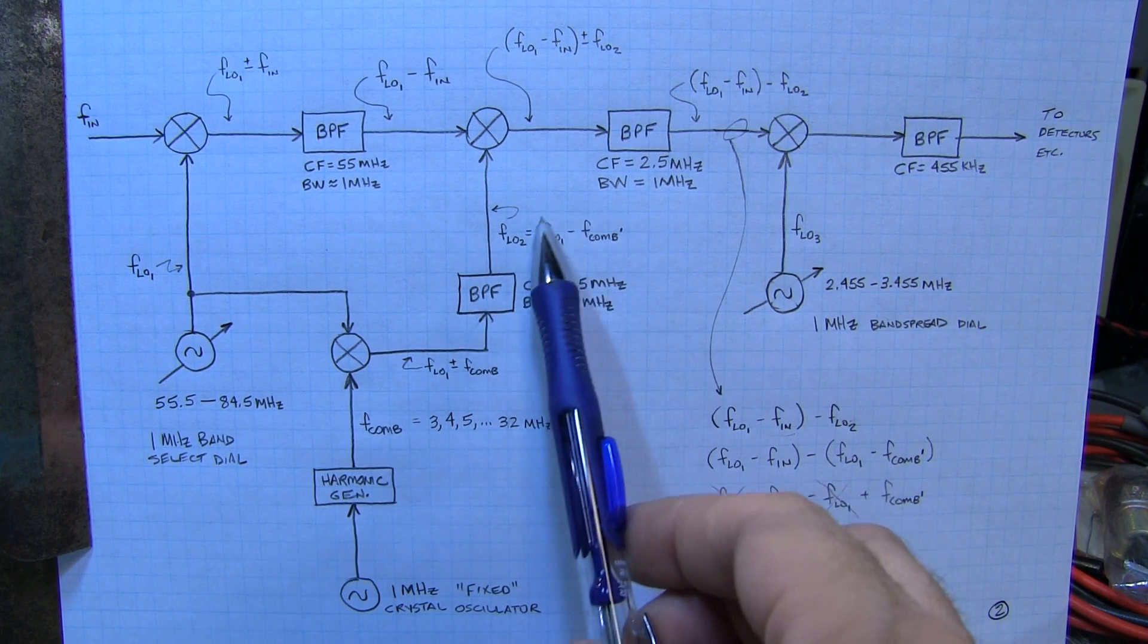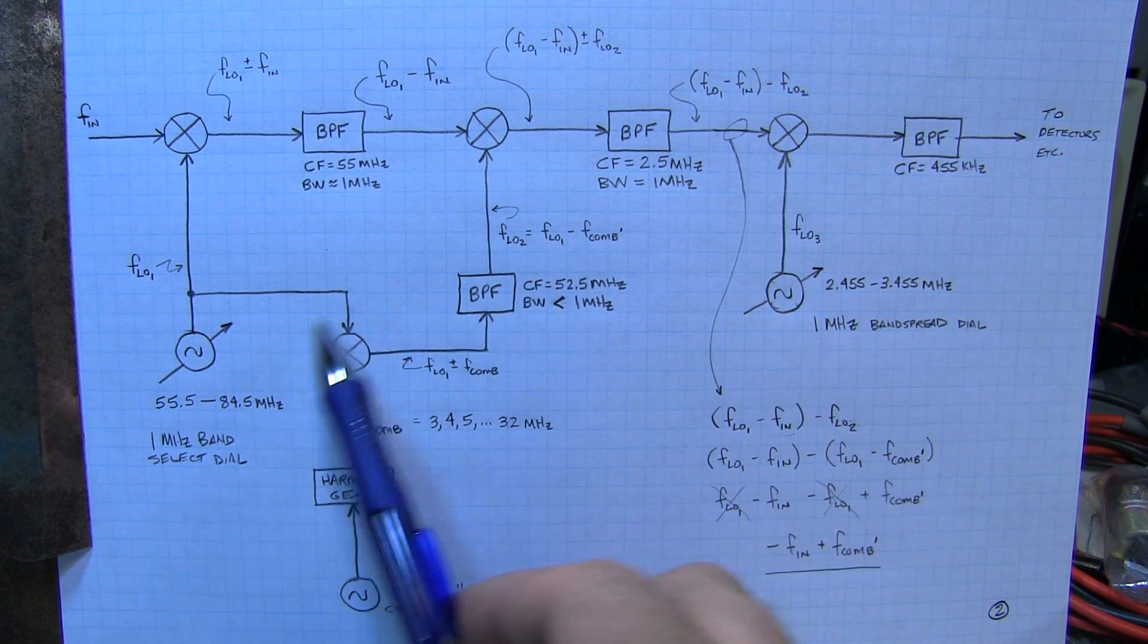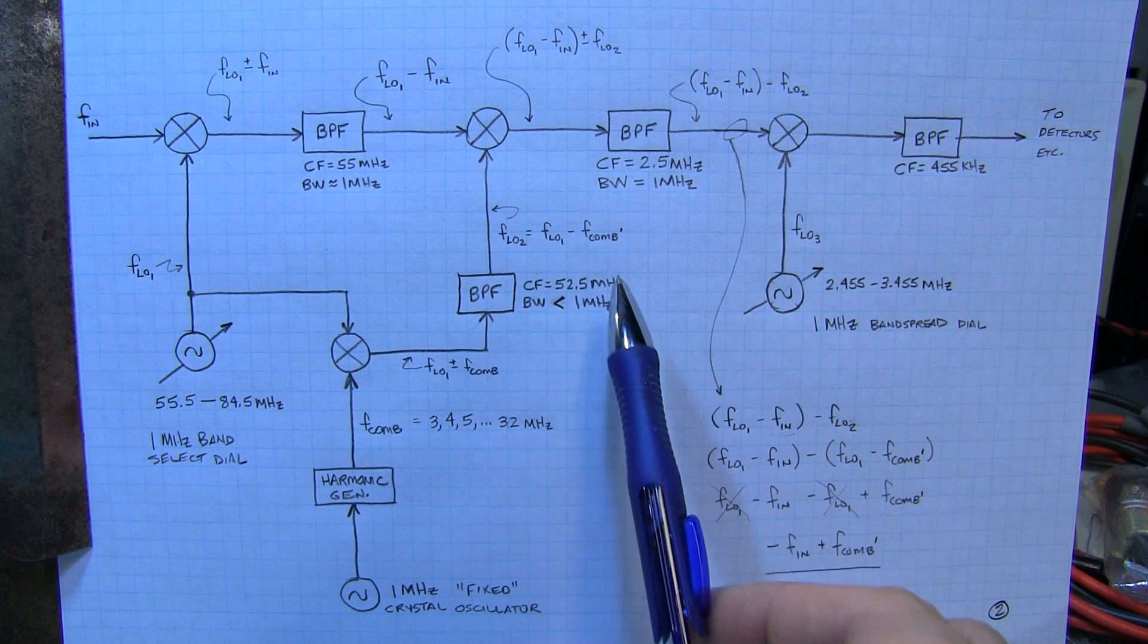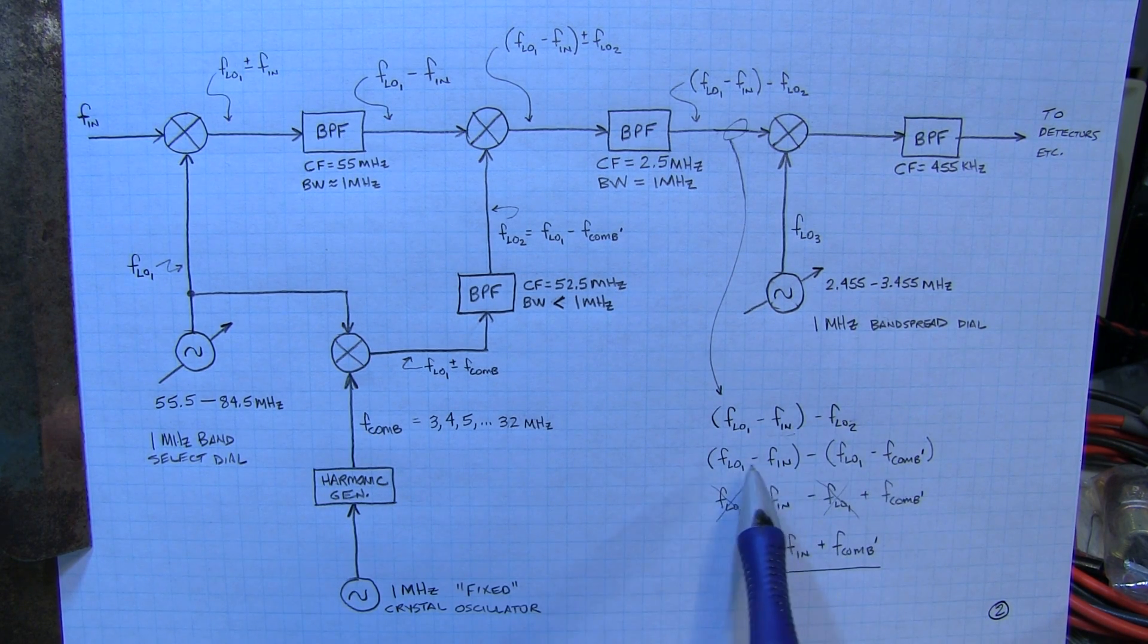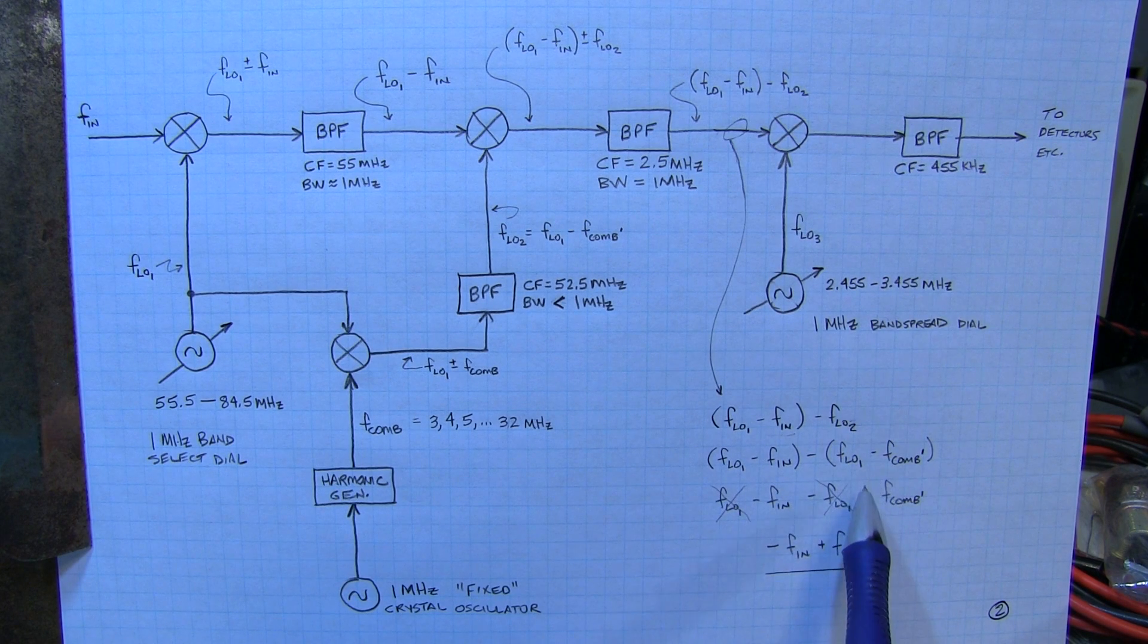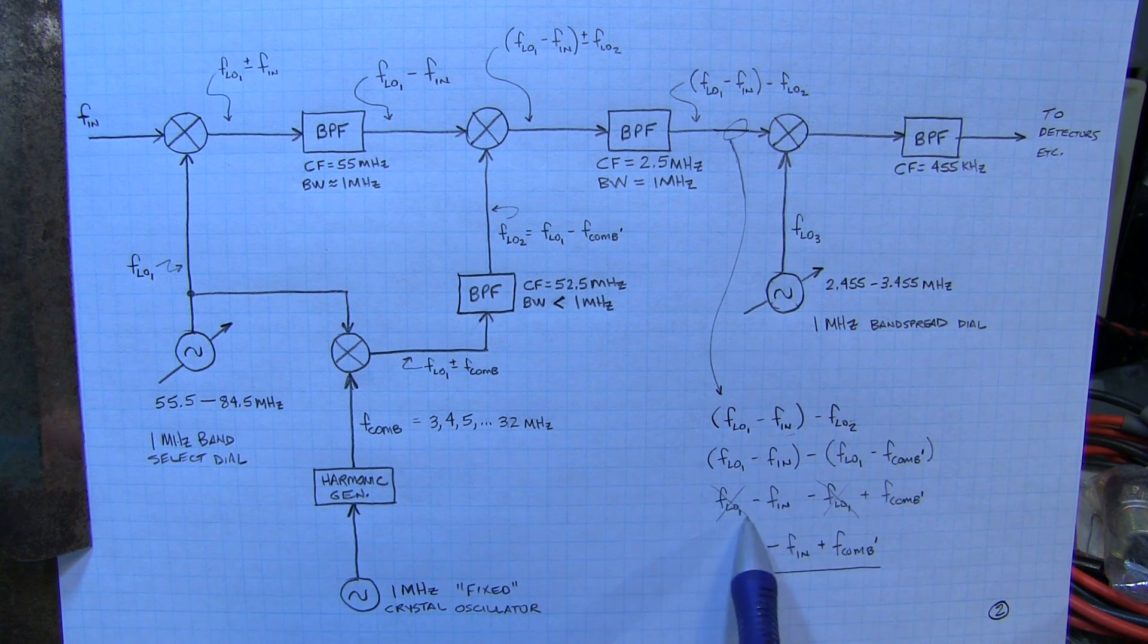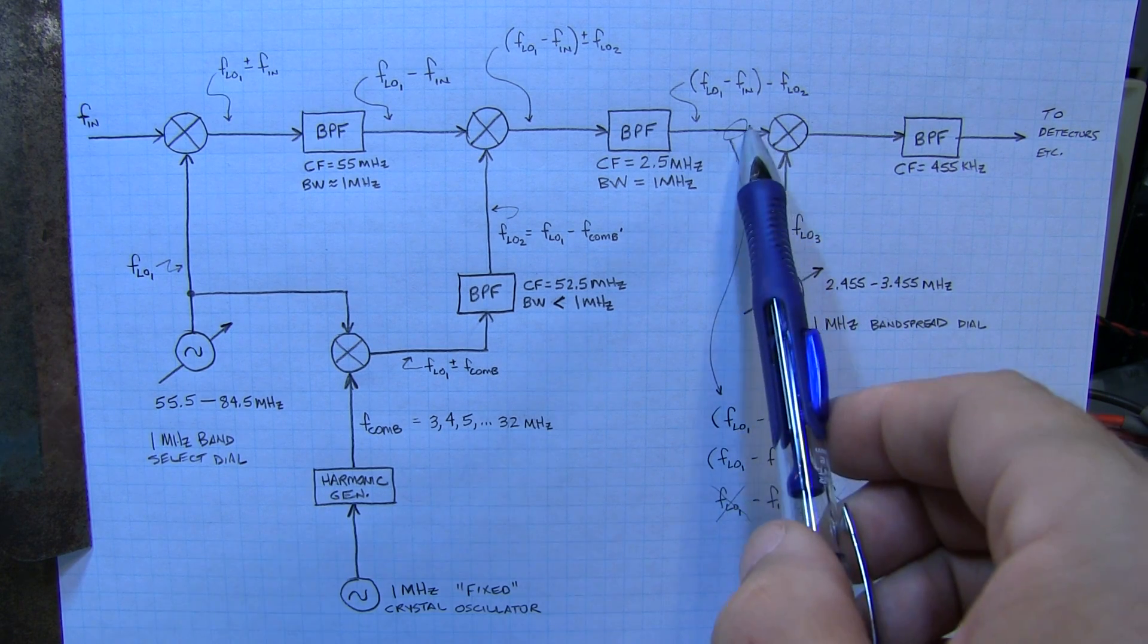Now remember the local oscillator 2 frequency is essentially equal to the VFO frequency minus the comb. We'll put that and expand that equation down here. Now if we just sum all this up, we see that the FLO, the frequency from the local oscillator, drops out of the equation.